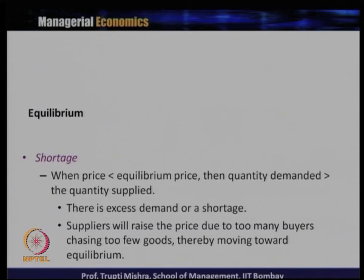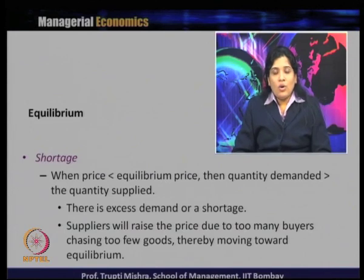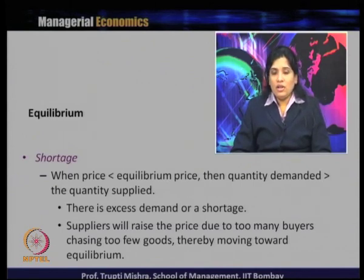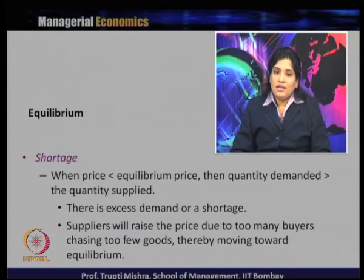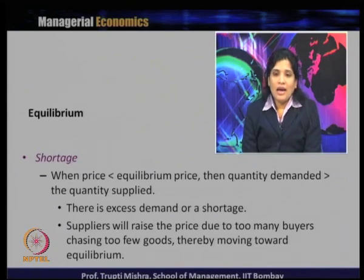The second situation is shortage. When price is less than the equilibrium price, the quantity demanded is greater than quantity supplied. As the law of demand says, a decrease in price leads to an increase in quantity demanded. When price is below the equilibrium, consumers demand more because the price is lower, leading to an increase in quantity demanded. Meanwhile, quantity supplied decreases because the price is low — since price and quantity supplied are positively related, suppliers also reduce supply.